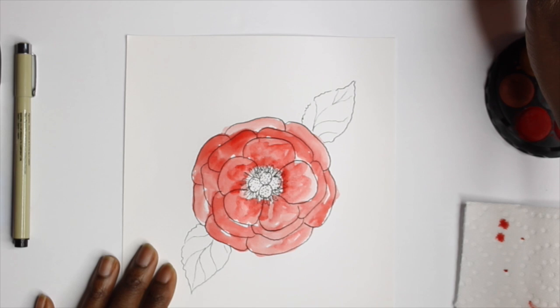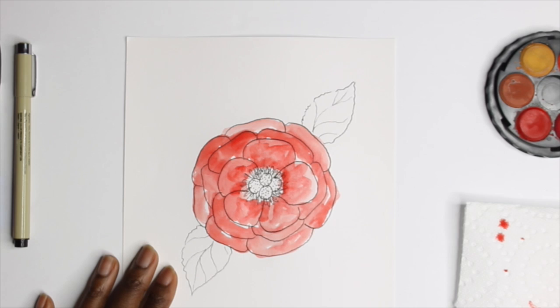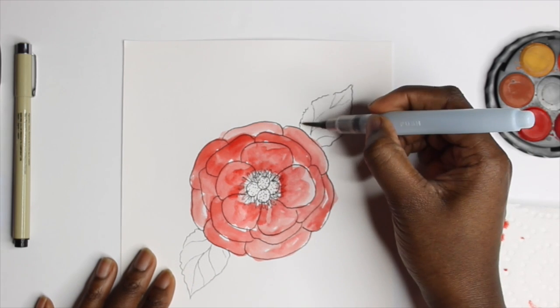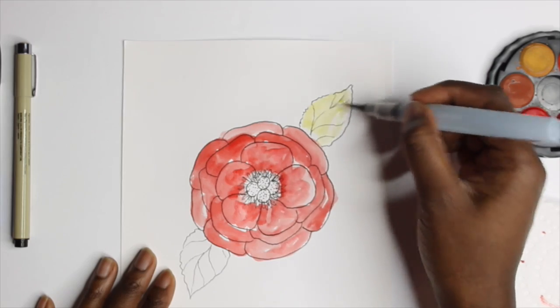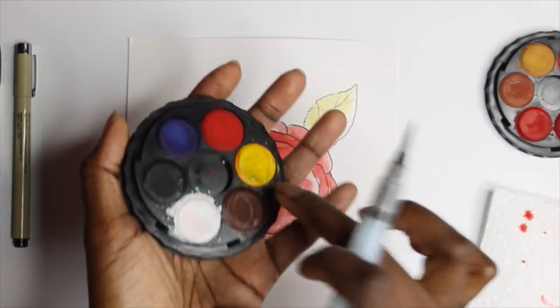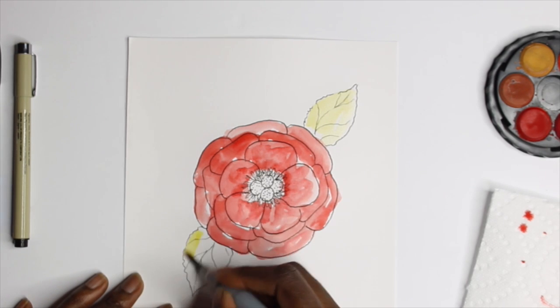So now we're going to be working on the leaves. For this one, just follow along with whatever colors I'm using. I'm going to be starting with a yellow base for the leaves just to add a little dimension to it, and then I'm going to be using a bit of green. Just follow along. It's really simple.